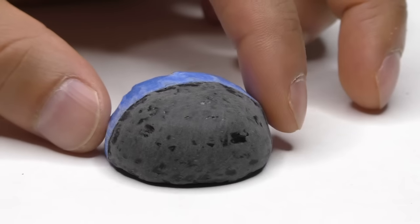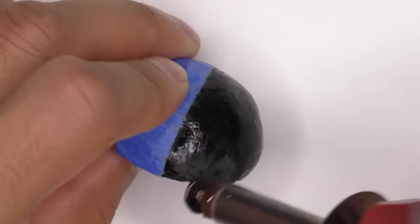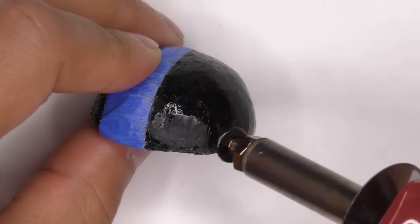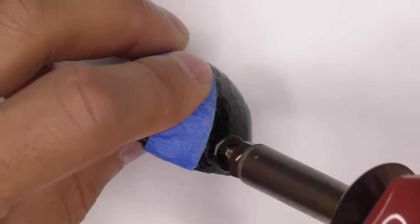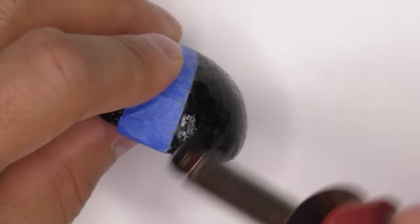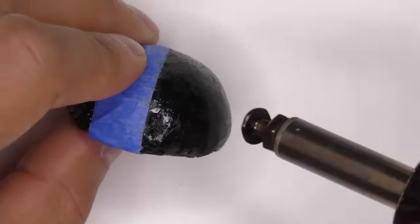I repeated the process by sanding again and then lightly going over the surface with the wood burning tool again. You have to go very lightly because the wood burning tool can cause more divots and roughness if you're not careful.